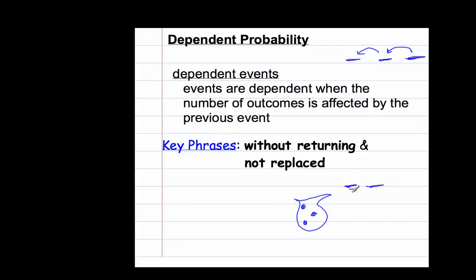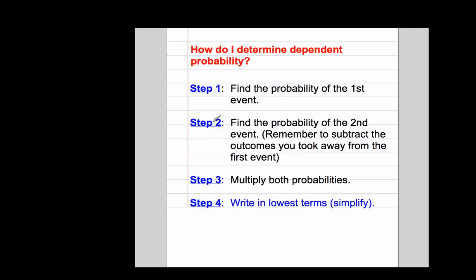In the first event you have three marbles, but you take one out and don't put it back — so it's now gone. How many total possible outcomes do you have? You have two. That shows how dependent events work: the outcomes will be affected by the previous event. If you don't return it or replace it, there will be one less outcome. 'Not putting it back in' and 'without replacing' are ways of signaling a dependent probability problem.